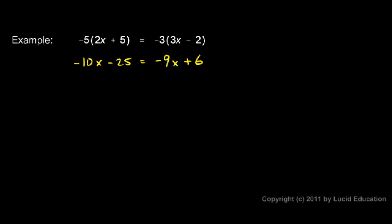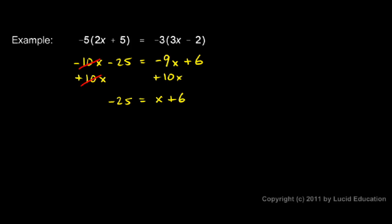Now to isolate x, I'm going to add 10x to each side. Whatever I add on one side, I add on the other. On the left side, the negative 10x and the positive 10x cancel each other out, leaving me with a negative 25. Don't forget that that negative sign stays on right there. On the right side, I have negative 9x plus 10x. That equals x, and I still have my plus 6, so x plus 6.